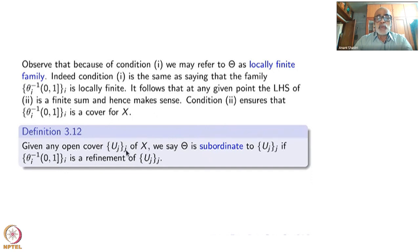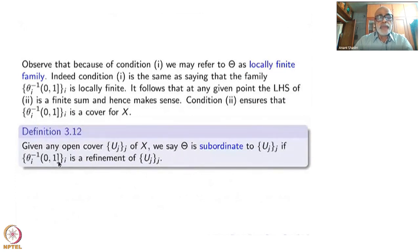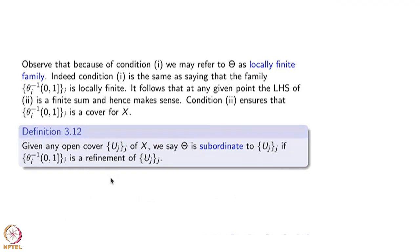Given any open cover {U_j} of X, we say that the family θ is subordinate to {U_j} if these open subsets — take this family — form a refinement of the open family {U_j}. This family is indexed by j, and θ is indexed by i; the indexing sets can be different or the same. Refinement means for each member here there is a member there, and that association gives you a function on the indexing set.